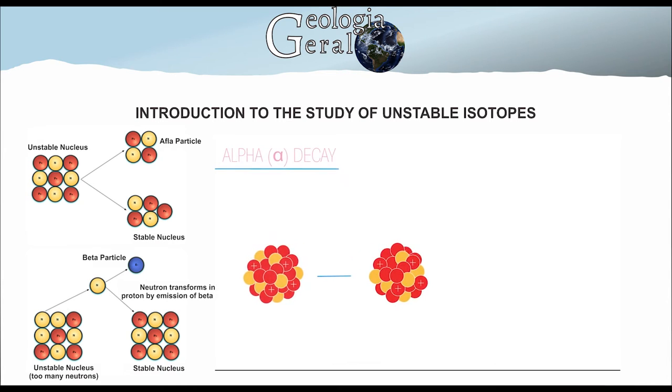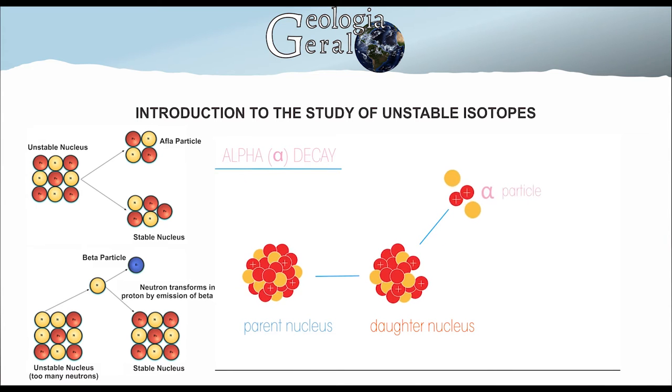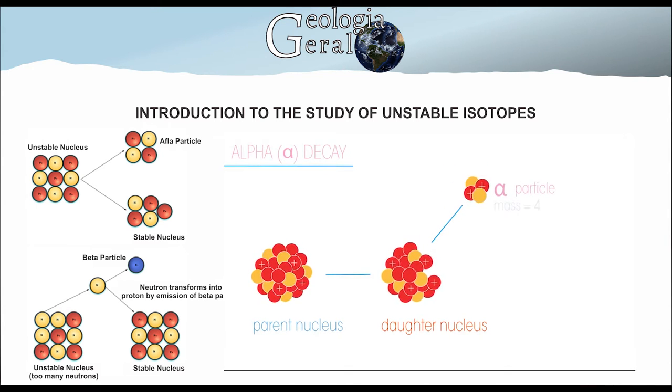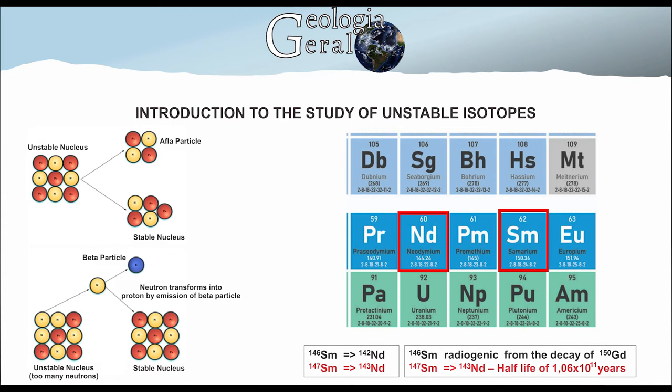In the case of the alpha particle, it is composed of two protons and two neutrons, and is then responsible for the decrease of four units of mass and two positive charges, for example, samarium 147 to neodymium 143.